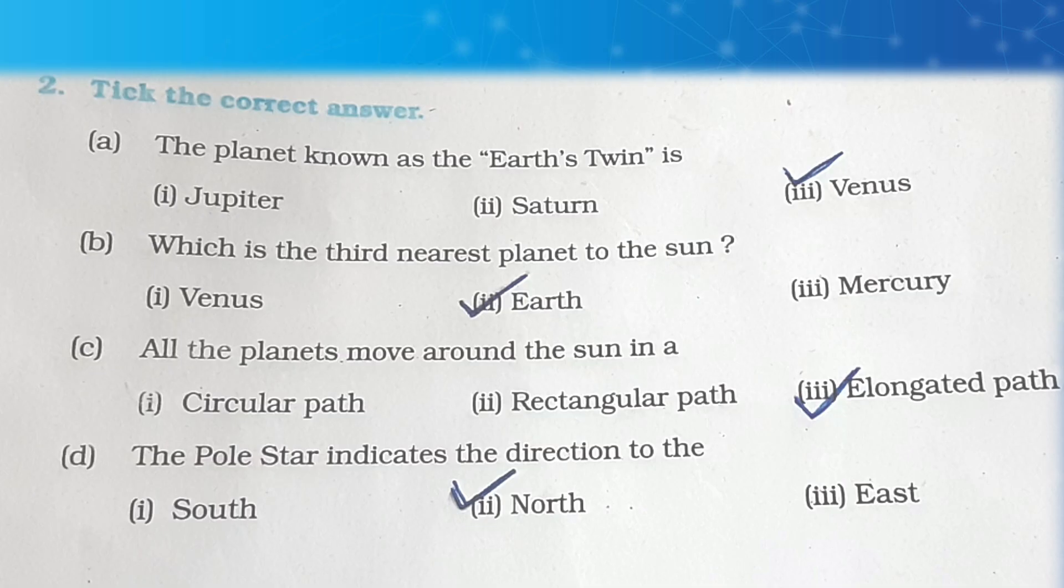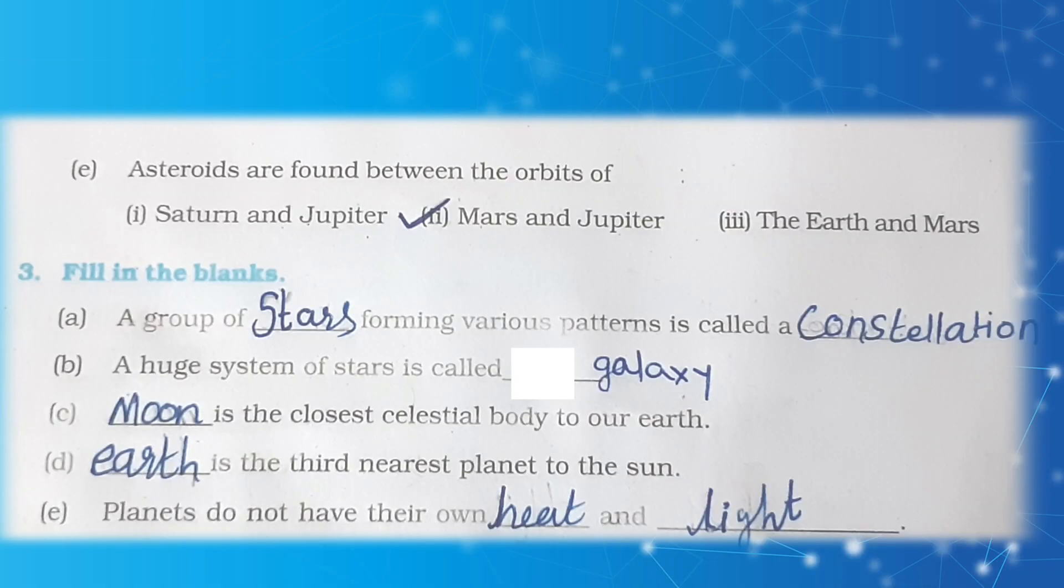Take the correct answer. The planet known as Earth's twin is Venus. Which is the third nearest planet to the Sun? Answer: Earth. All the planets move around the Sun in an elongated path. The Pole Star indicates the direction to the north. Asteroids are found between the orbits of Mars and Jupiter.